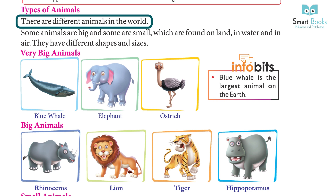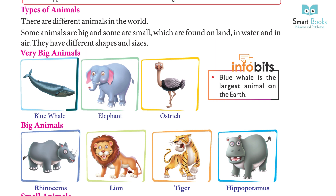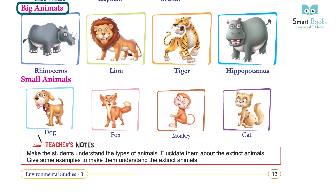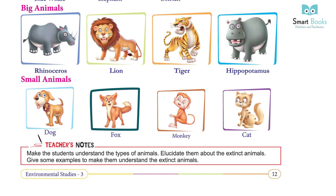There are different animals in the world. Some animals are big and some are small, found on land, in water, and in air. They have different shapes and sizes. Very big animals include the blue whale, elephant, and ostrich. The blue whale is the largest animal on Earth.